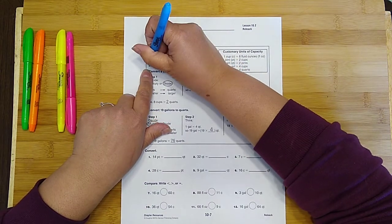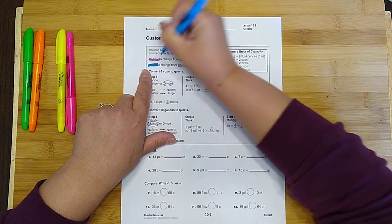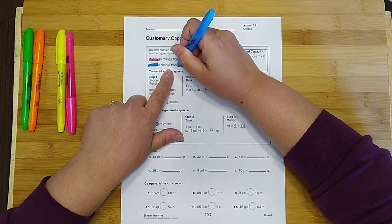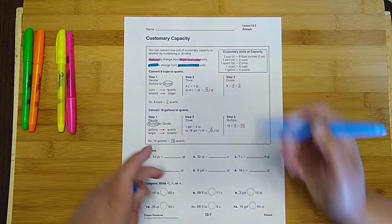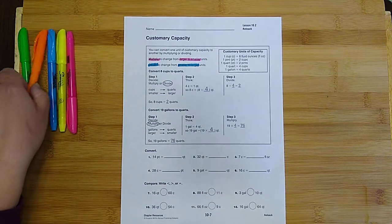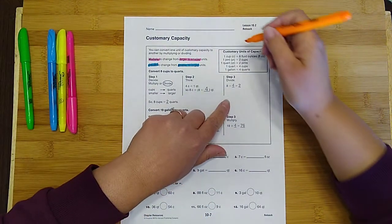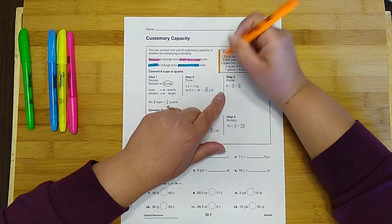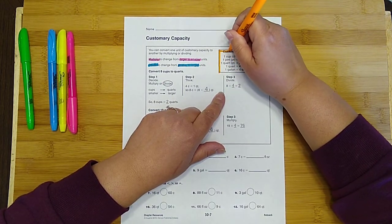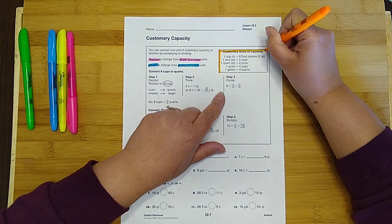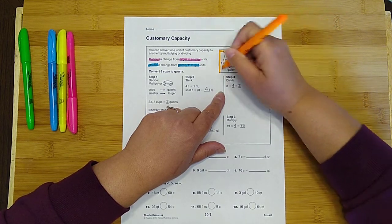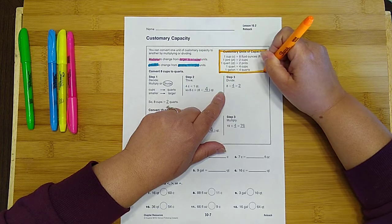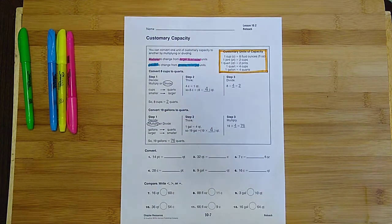And then we are going to divide to change from smaller to larger units. All very important information. And then over here, this is our customary units of capacity chart. This will give us all of our conversions that we're going to use to do our math.